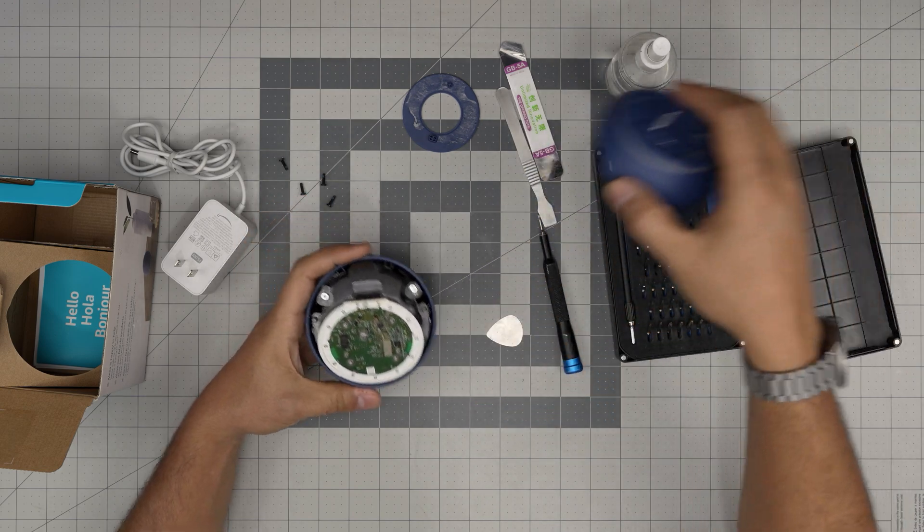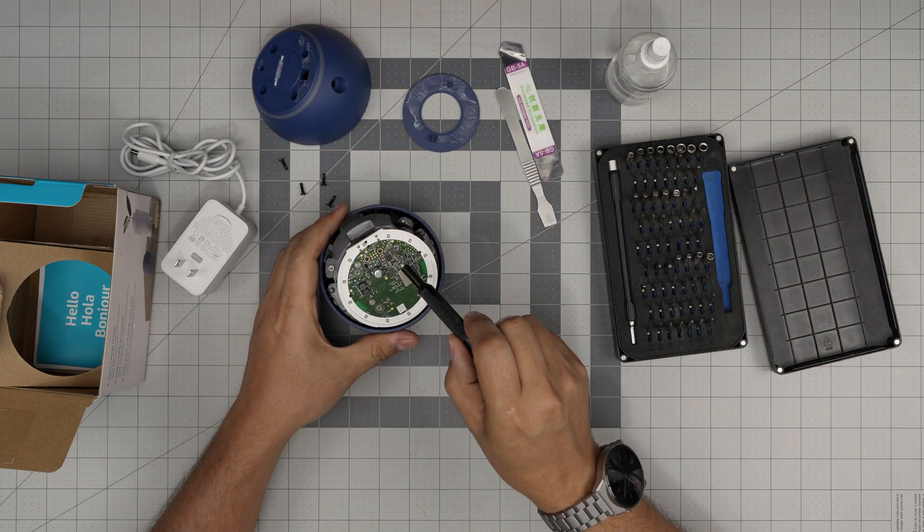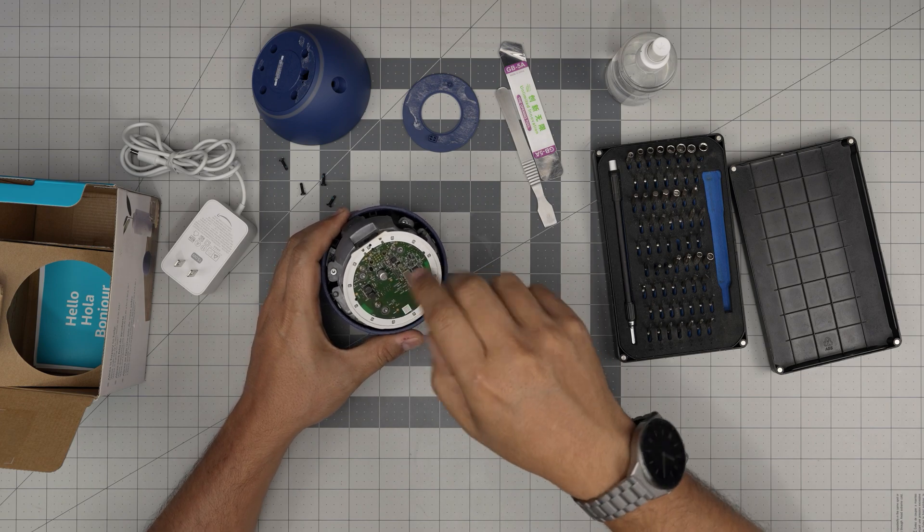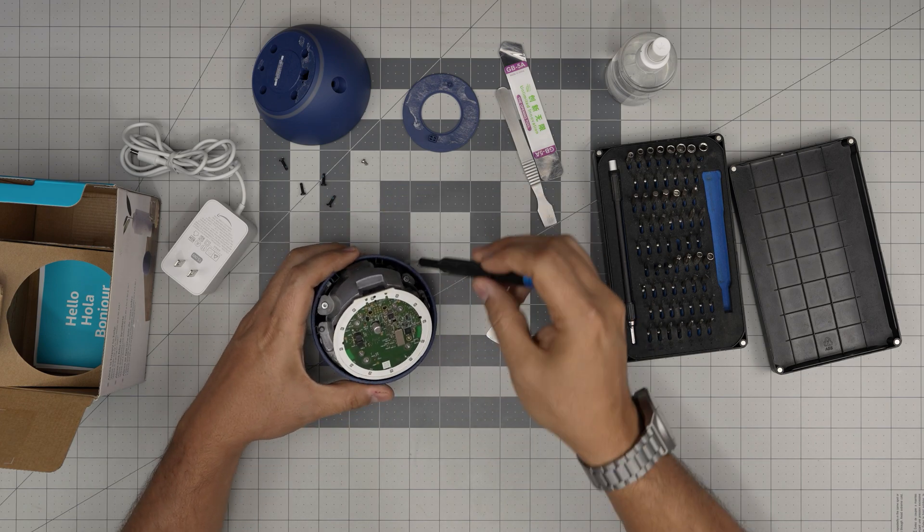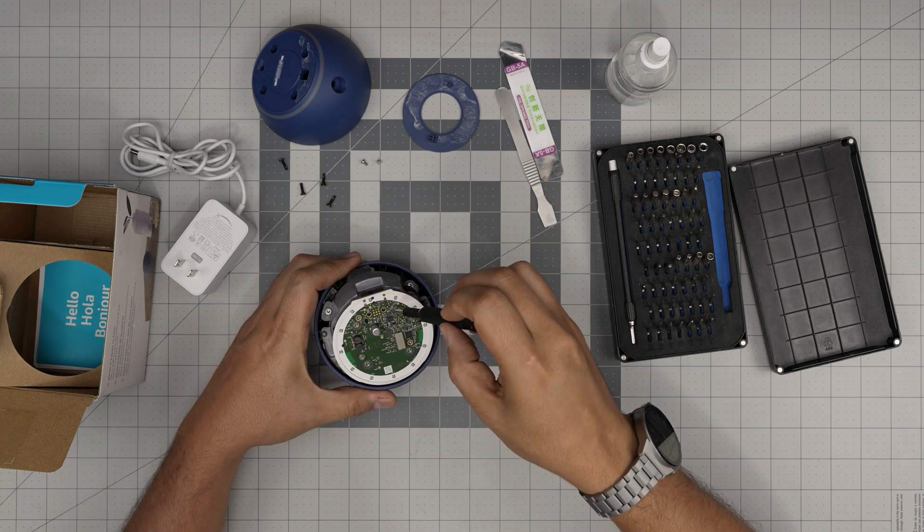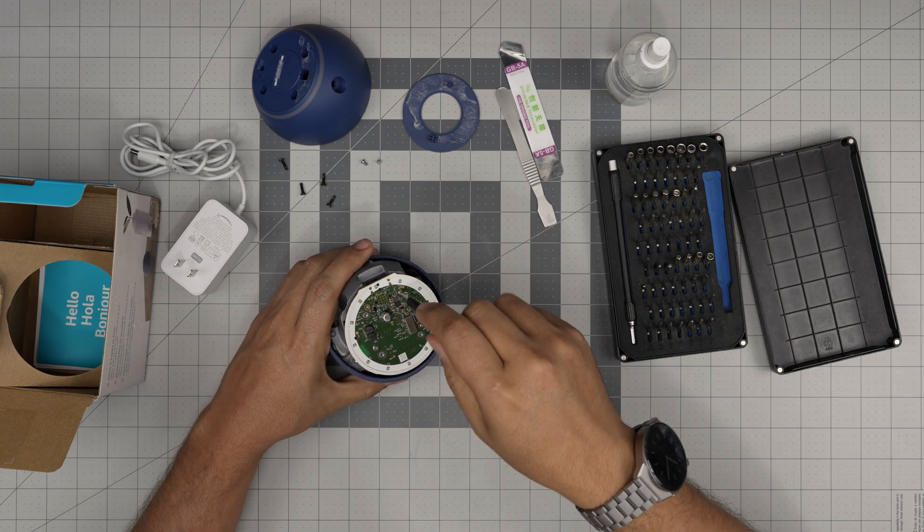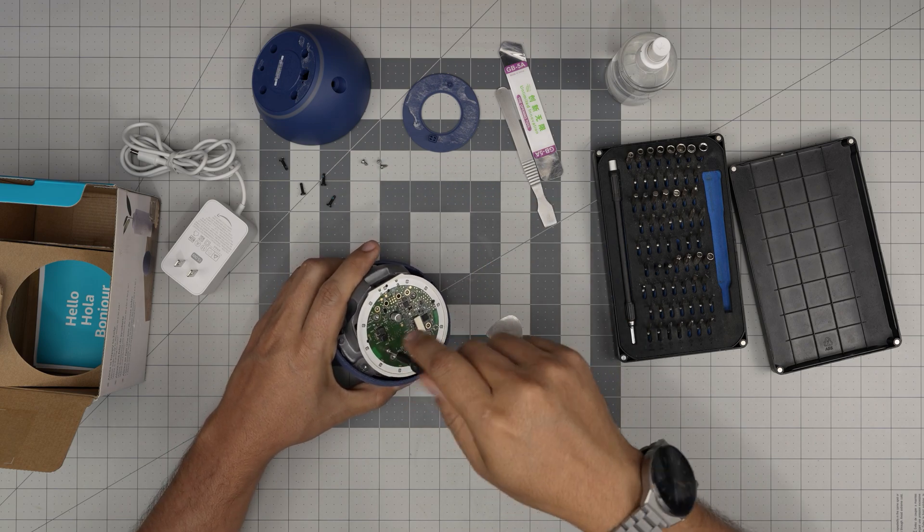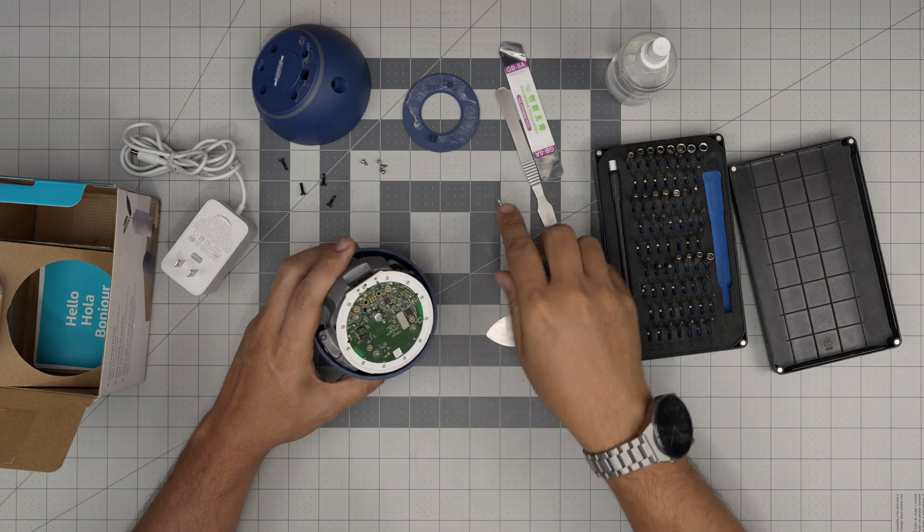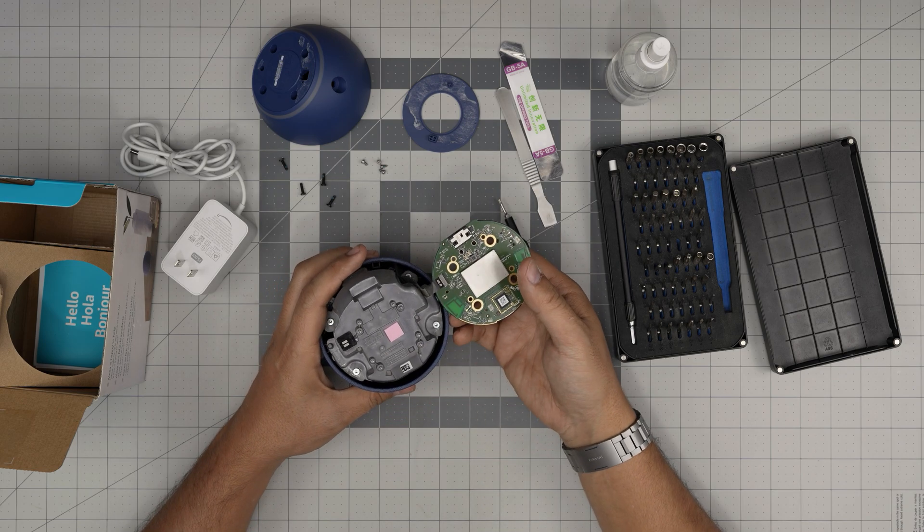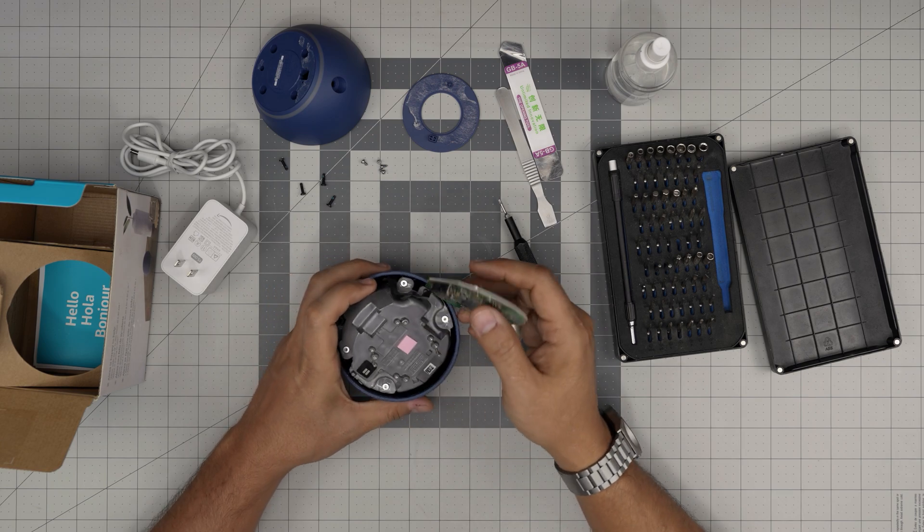Let's remove these one, two, three, four screws on the board using the same torque screwdriver. Now I can lift it up to one side, toward the side that we have the flex cable.